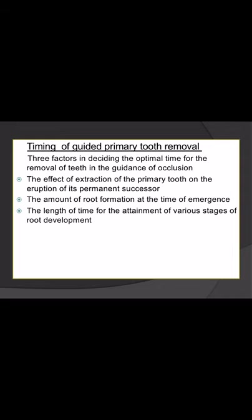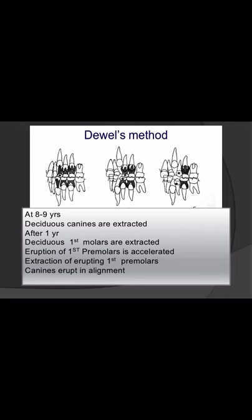To determine proper timing for extraction, three factors must be considered: the effect of extraction of the primary tooth on the eruption of its permanent successor, the amount of root formation at the time of emergence, and the length of time for the attainment of various stages of root development. Keeping these three factors in mind, the timing of extraction is decided.